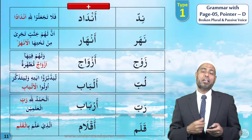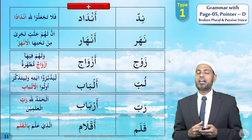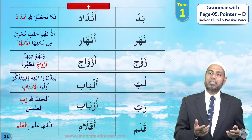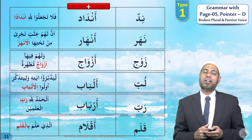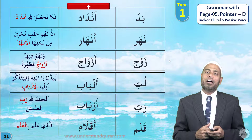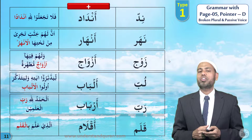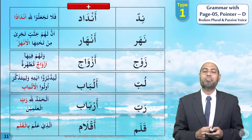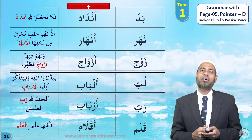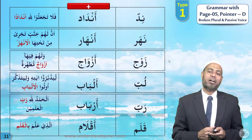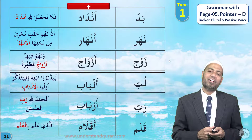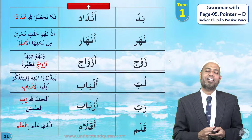Can you give me the plurals? Nidd — andad. Nahar — anhar. Zawj — azwaj. Lub — albab. Rab — arbab. Qalam — aqlam. Well done, Alim.